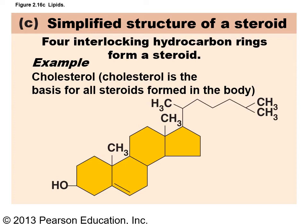A steroid has four interlinking rings — wherever the lines meet there's a carbon. Cholesterol is the basis for all steroid hormones in the body. In males, that includes testosterone; in females, estrogen and progesterone. Cholesterol is the precursor to all of those hormones. You don't need to learn how to draw these structures, but it's interesting and I'd encourage you to take a chemistry class at some point.